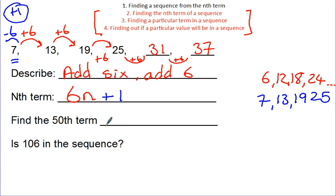Another question they might ask is finding the 50th term. So, you know that your nth term is 6n plus 1. We know that this n represents the numbers in the sequence, so the terms within the sequence. So, we're just going to substitute 50 in for n. So, 6 times 50. And then we're going to add on 1. So, 6 lots of 50 is going to be 300. Add on the 1 is 301.